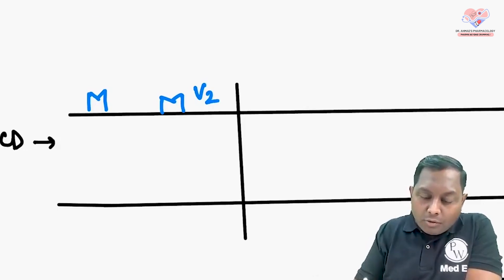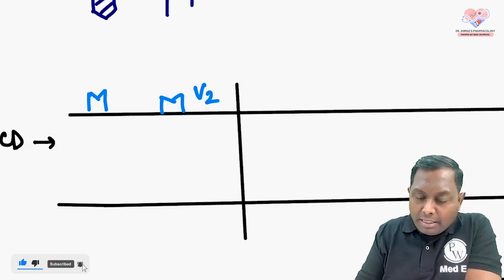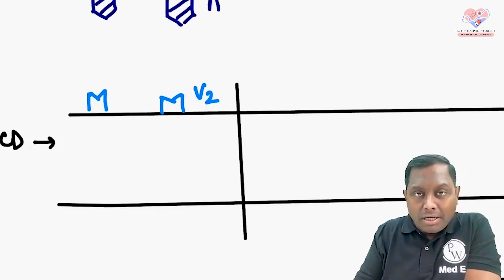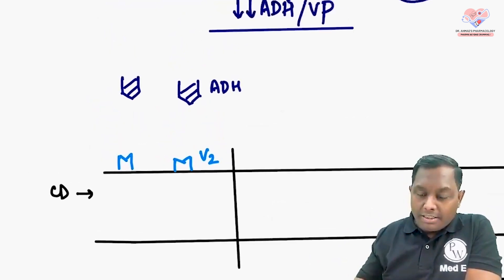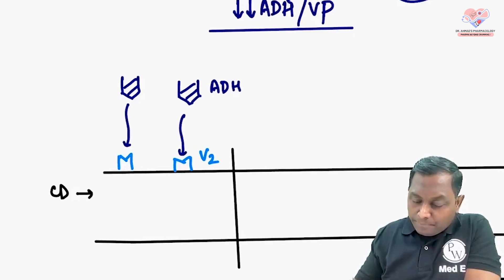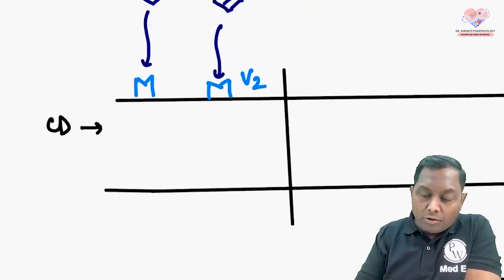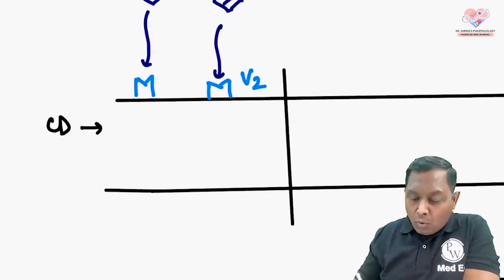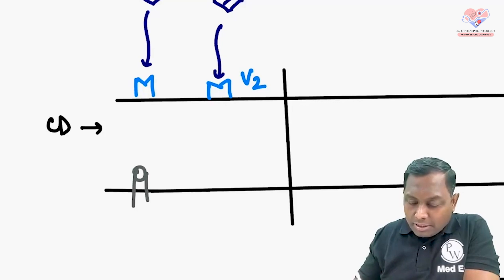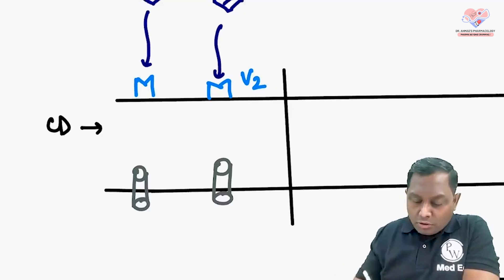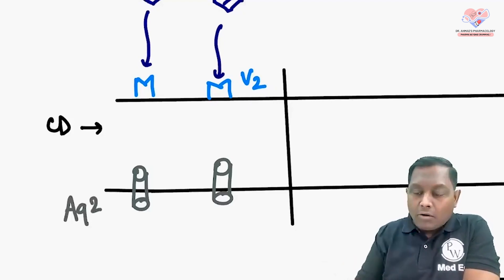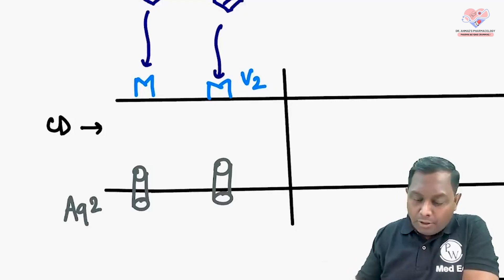Whenever the brain gives you vasopressin — that is anti-diuretic hormone coming from the posterior pituitary — whenever this V2 receptor gets stimulated by ADH (whose other name is vasopressin), what does it do? It upregulates the level of aquaporins. The aquaporins present in the cytoplasm now become more available on the surface — this is aquaporin-2.